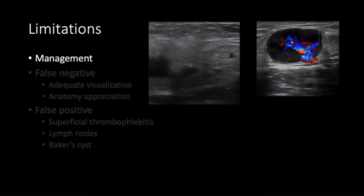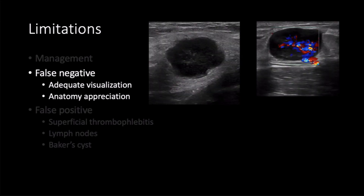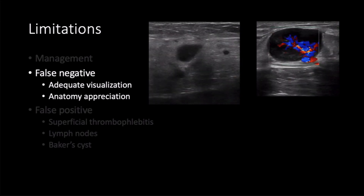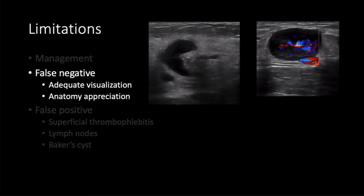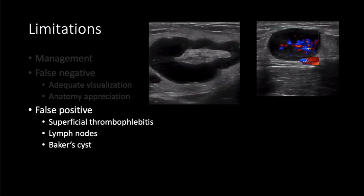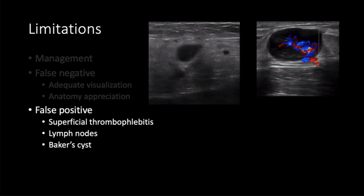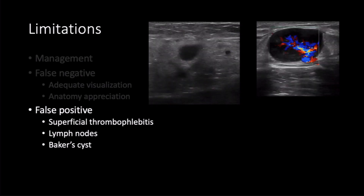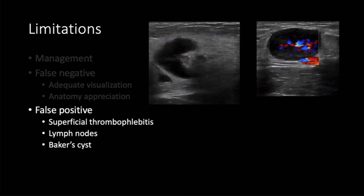I have a low threshold to involve vascular or interventional radiology to help with management decisions in complex cases. False negatives can occur, and this is why I emphasize appreciation of anatomy so heavily. I find that most false negative studies I review are when superficial veins are identified as deep. If you are concerned that visualization is poor, I would subsequently order a comprehensive study in those patients. False positives can occur as well, and the reason for the examples provided are lymph nodes. Lymph nodes have a classic hypoechoic rim with a hyperechoic hilum and are blind-ending. Additionally, color flow can usually be obtained given the vascular hilum. Superficial thrombophlebitis and Baker cysts can incorrectly be called a DVT as well, and a good appreciation of anatomy will make this less common.